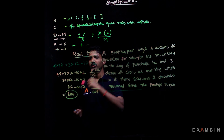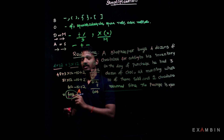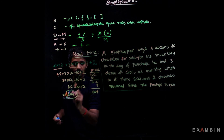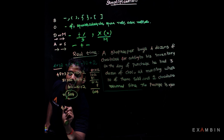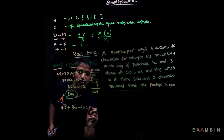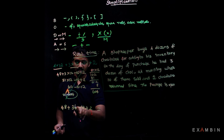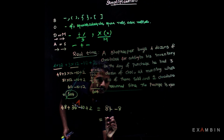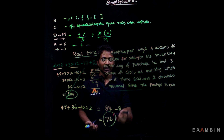We have to apply the BODMAS rule. First, take care of multiplications: 4 into 12 is 48, and 3 into 12 is 36. Then handle additions and subtractions: 48 plus 36 minus 10 plus 2 equals 84 minus 8, so the answer is 76. The shopkeeper has 76 chocolates in store.